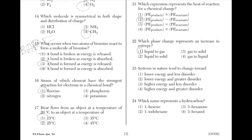Systems in nature tend to go toward... the answer is 2: lower energy and greater disorder. An example is that when you come home from school, you will have less energy, and your room will probably never be clean — which represents the lower energy and greater disorder that is often present in nature.